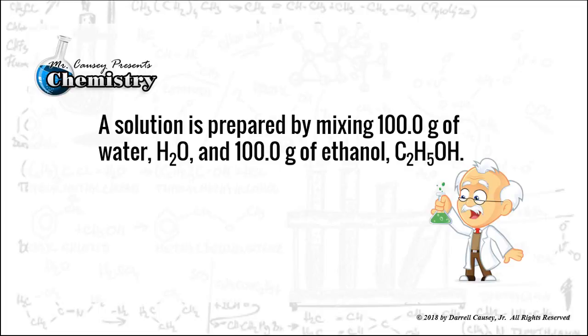Let's try one. A solution is prepared by mixing 100 grams of water, H2O, and 100 grams of ethanol, C2H5OH. Now we're going to assume in this situation that water is the solvent and ethanol is the solute. So we're going to determine the mole fraction of each substance.